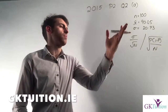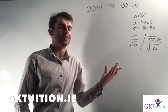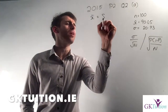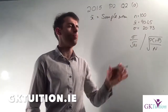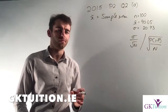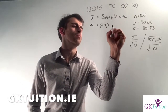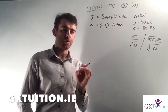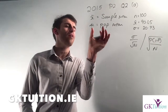Let me talk you through this. N always represents the number of people in my survey, so I surveyed 100 people — N is clearly 100. X-bar is your sample mean. I took a sample of 100 people and the average amount those 100 people spent was €90.45. Don't mix up X-bar with mu. Mu is the population mean. If I surveyed every single person who went to the supermarket that Saturday and got their average spend, that would be mu.